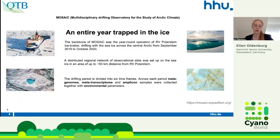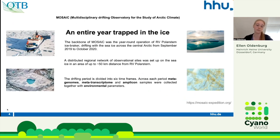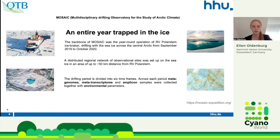The first is the MOSAIC project — Multidisciplinary Drifting Observatory for the Study of Arctic Climate. It involved the icebreaker Polarstern, which drifted with the sea ice over the central Arctic from September 2019 to October 2020. During this time, a distributed regional network of observation science was established to collect metagenome, metatranscriptome, and amplicon samples, along with environmental parameters.